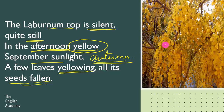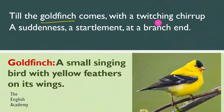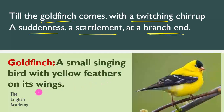The tree looks yellow because its flowers are yellow and its leaves are also turning yellow, and in September's sunny afternoon, this yellow tree looks very attractive and bright — that was the introduction. Till the goldfinch comes with a twitching chirp, a suddenness, a startlement at a branch end. Goldfinch is a small singing bird with yellow feathers on its wings. Twitching means short and sudden — small, separate sounds it makes.